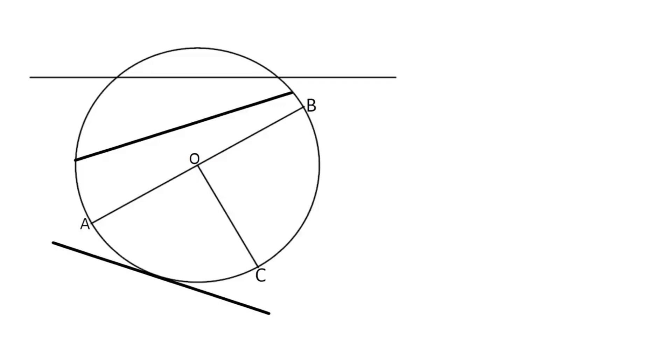So if they draw a line from the circumference, passing through the center to the other end of the circumference, we call this line the diameter.